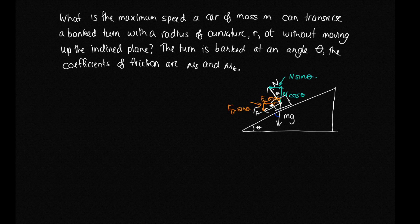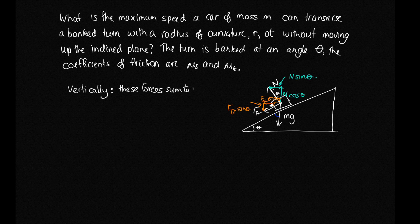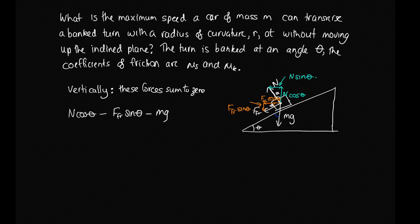Let's start with the vertical components. The car is not moving up or down vertically, so these forces must sum to zero. The only upward force is N·cos(theta), and then we subtract the frictional force times sin(theta) and subtract mg, and that equals zero.